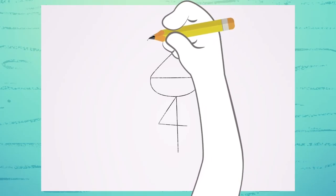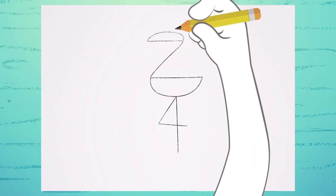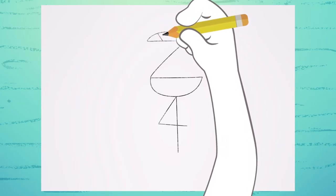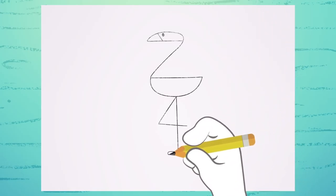To draw the beak, draw a line from here to here. Another one here. And a little eye. Now, draw the feet.